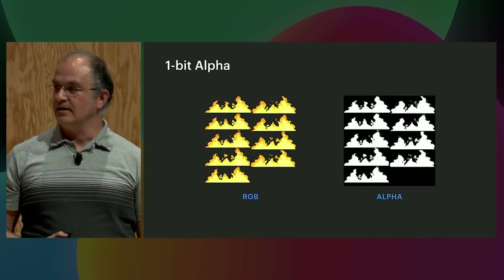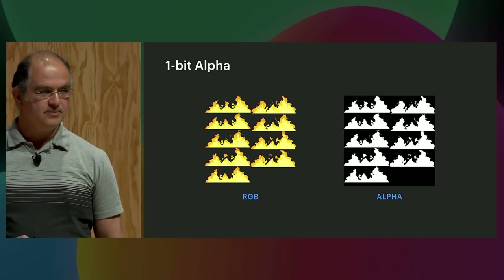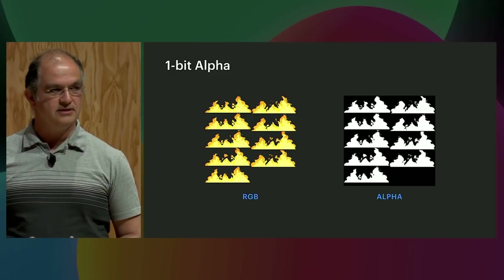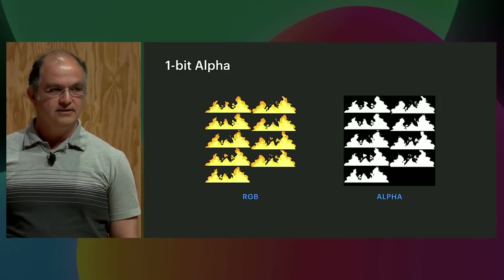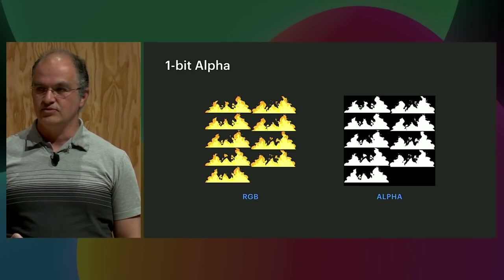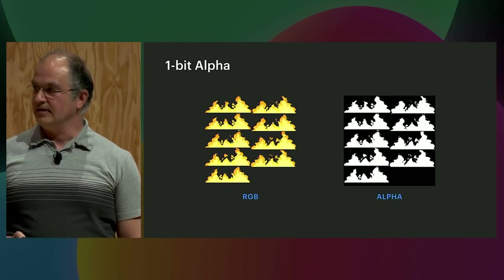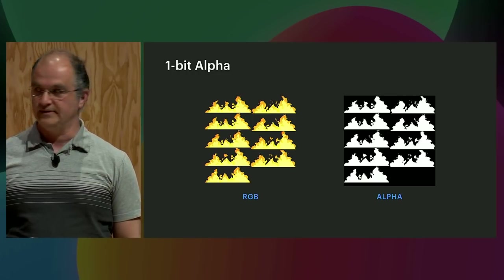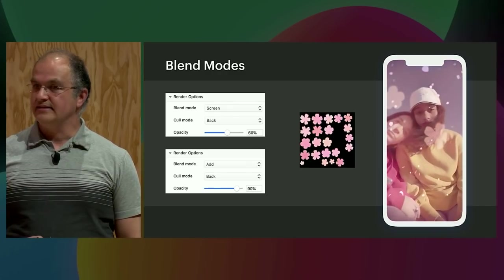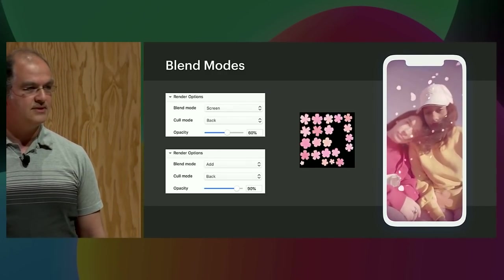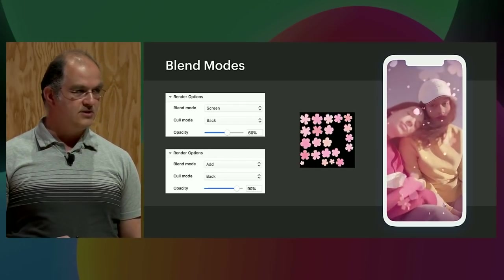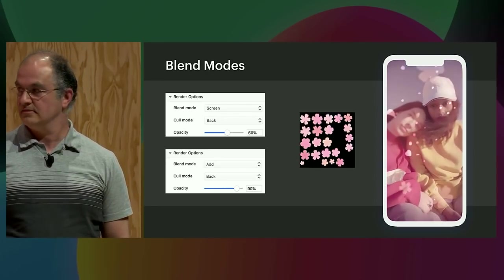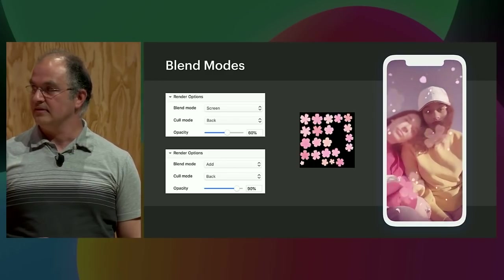Another thing we can do is use one-bit alpha, which is most applicable to Android. This is useful when you have pure on/off transparency with no feathering or anti-aliasing on the edges. In that case, you can use what's called ETC with one-bit alpha, and that will be the same size as just RGB — as if you don't have alpha. Another option is to use different blending modes: instead of traditional alpha blending, you might use additive blending or screen blending, in which case you don't really need an alpha channel. This is one example effect at Instagram that does that.